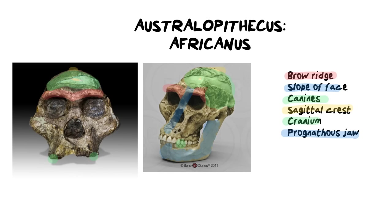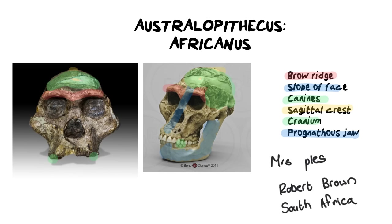Our famous fossil for Australopithecus africanus is Mrs. Ples. Mrs. Ples was discovered by Robert Broom, and we need to know she was found in South Africa. This links back to South Africa being the cradle of humankind — the oldest fossils are found in Africa, specifically only in Africa. Younger fossils are found outside of Africa, and when talking about where human life originated, Africa is the only place we can find Australopithecines. The oldest fossils are found particularly in South Africa.